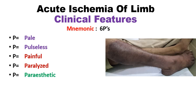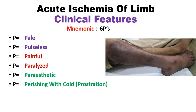The fifth P is paresthetic, meaning loss of sensation in the limb due to acute ischemia. The last P is perishing with cold, also called prostration. This is the sixth clinical feature — you can remember the signs and symptoms with these six P's to recall acute ischemia of the limb.